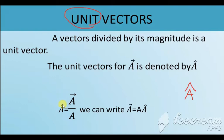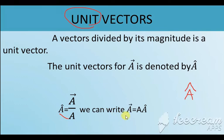A-cap is equal to A (vector) divided by |A|. A, which denotes the modulus of A, is also said to be the value of A. From this we can also write: if you bring |A| to the other side, you get A (vector) = |A| into A-cap. A unit vector is nothing but the value which will be equal to 1.